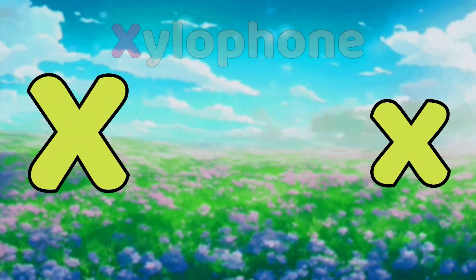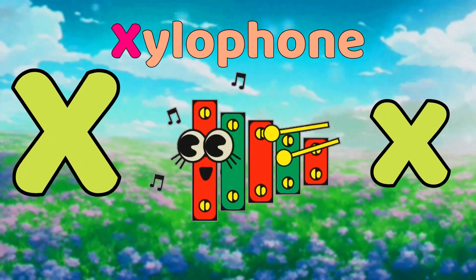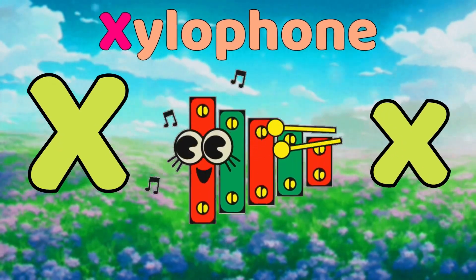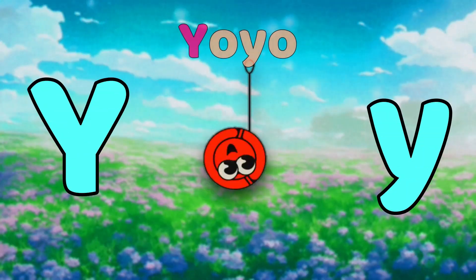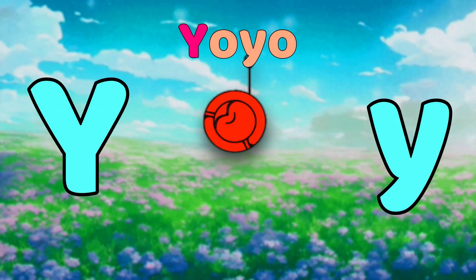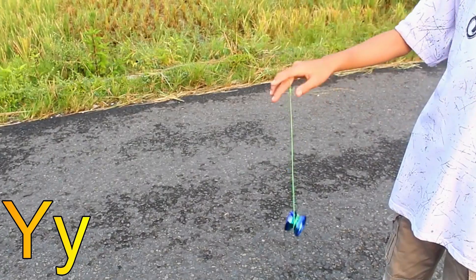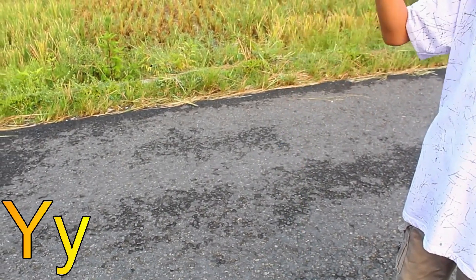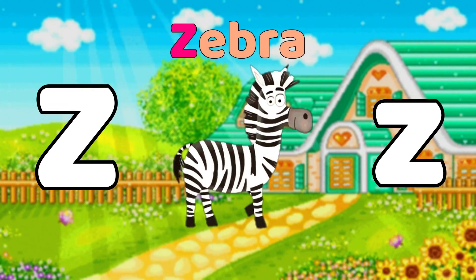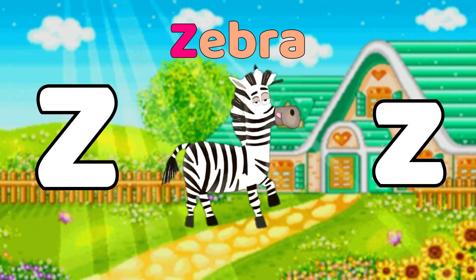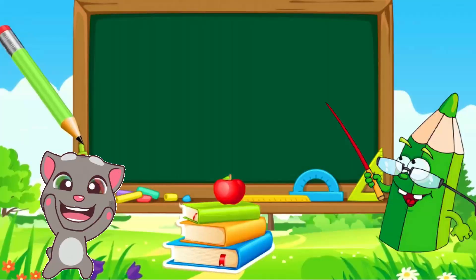X is for Xylophone. X, Xylophone. Y is for Yo-yo. Y, Yo-yo. Z is for Zebra. Z, Zebra.